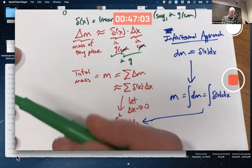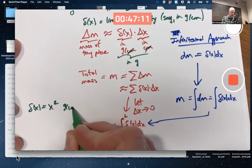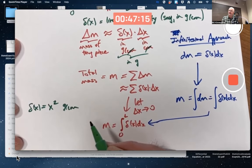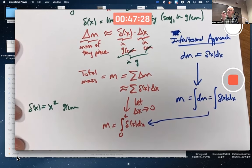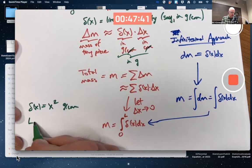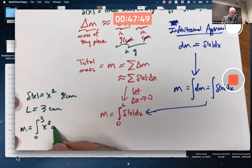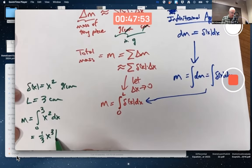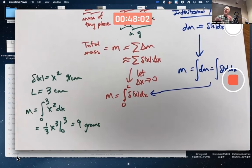Let's take an example. Let's imagine δ(x) equals x² grams per centimeter. For any value of x, this gives you the linear density at that location. For example, δ(2) is 2² is 4 grams per centimeter. Multiply that times the length of the tiny piece, you'd get the mass. Let's say the length is 3 centimeters. The mass would be the integral from 0 to 3 of x². That'll be 1/3 x³ from 0 to 3, and that'll end up being 9 grams.